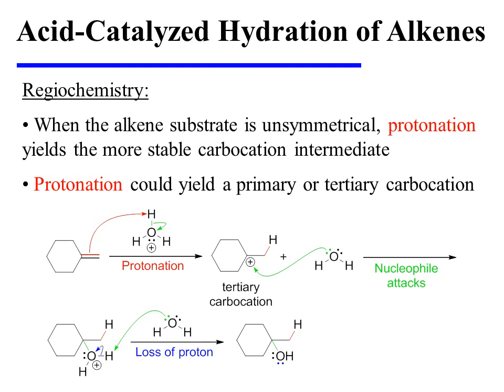When the alkene substrate is unsymmetrical, protonation occurs so as to provide the more stable carbocation intermediate. This usually follows Markovnikov's mnemonic, in which we would say that the carbon of the alkene that has more protons acquires the new proton. However, conjugation can sometimes be a complicating factor, so it is always useful to evaluate the stability of both possible carbocation intermediates.